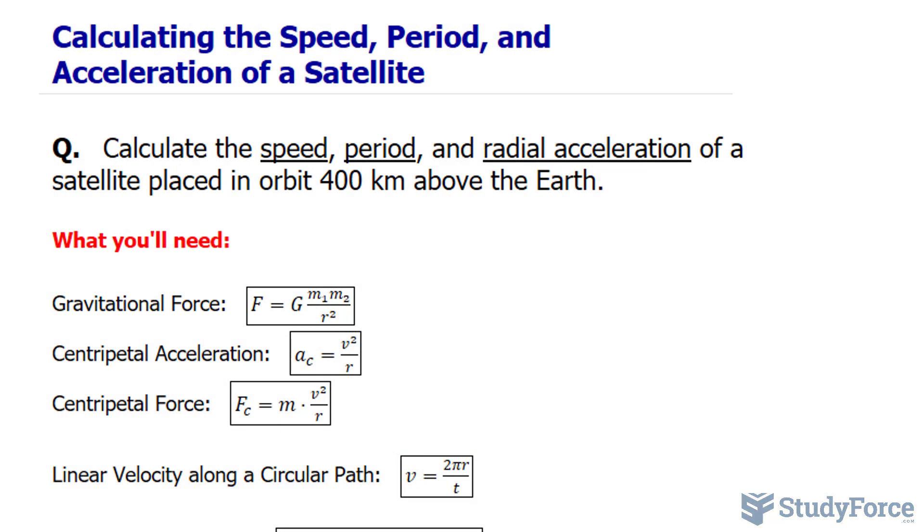This can be represented mathematically by setting the gravitational force formula equal to the centripetal force formula shown here. So we have the gravitational force represented as G times m₁ times m₂ over r squared equals the mass times the velocity squared over r.